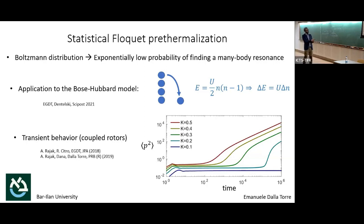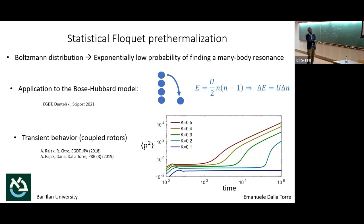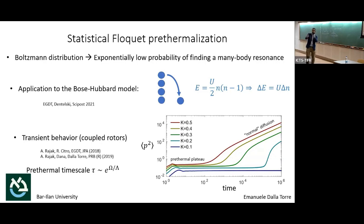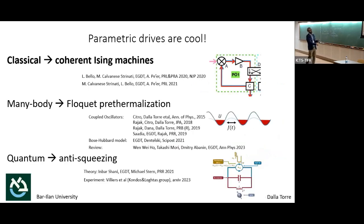What this means is that the energy as a function of time has two regimes: one where the system is basically pre-thermalized — absorbing very little energy. In the long run, even that very little energy will heat the system up, and once heated you find rotors oscillating fast in resonance with your drive. The heating then accelerates. The exponentially suppressed heating rate means you need to wait an exponentially long time before this happens. That is the signature of statistical Floquet pre-thermalization.